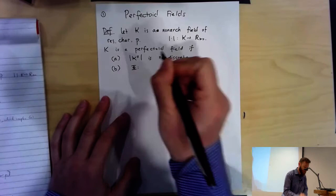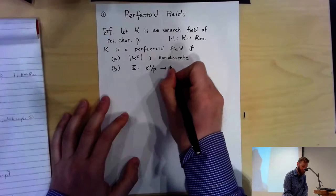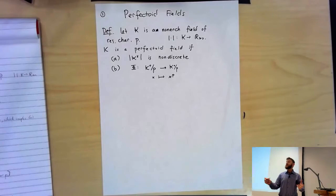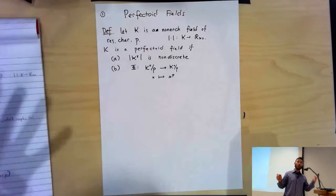So K is something very, very ramified. If it's characteristic zero, it's something very, very ramified over Q_P. The second property resembles the condition for a ring to be perfect. If I look at the Frobenius map, which I'll denote by phi — so this K-circ, or K-upper-zero, just like yesterday, it's the power-bounded elements of K, also called the ring of integers of K, often denoted O_K.